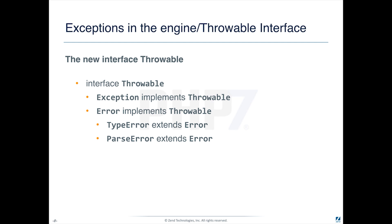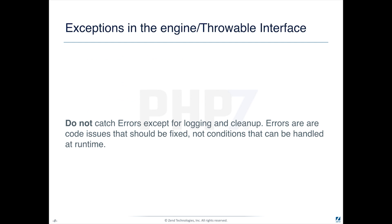This is our new hierarchy: Exception and Error are very similar, and they both implement throwable. At the moment they're identical, but there's no guarantee that they will stay identical in future versions. Underneath Error, we have TypeError and ParseError. Here's a hint: do not catch errors except for logging cleanup. Unlike exceptions, errors are code issues, and code issues need to be fixed — they're not conditions. An exception can potentially be handled; an Error cannot be handled. It is a code error, but PHP is allowing you to catch it so that you can clean up, log what happened, and get ready to move on.